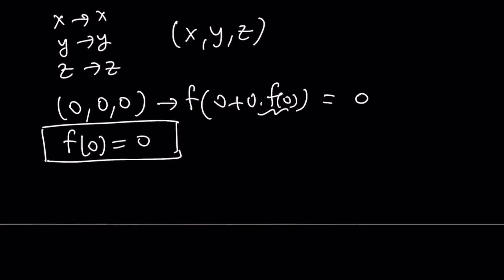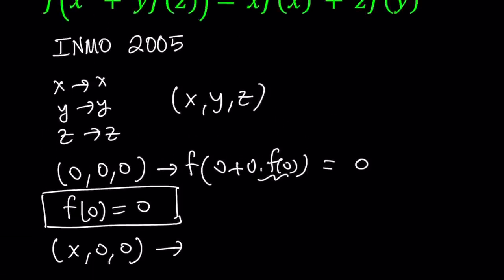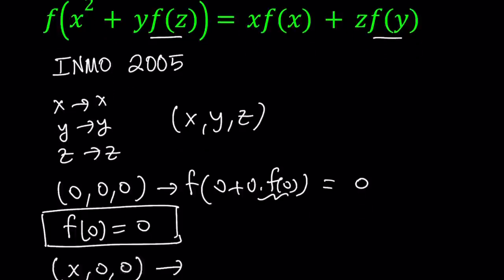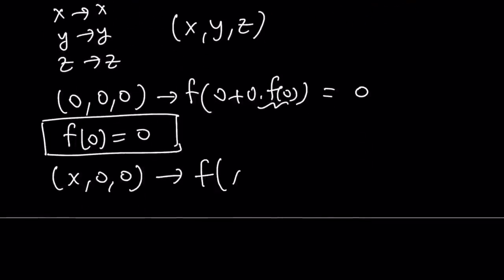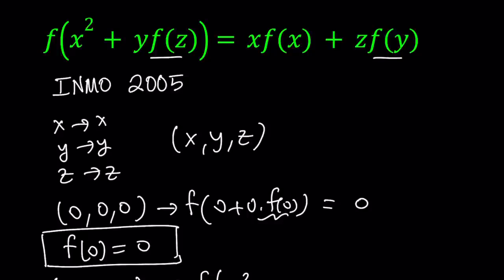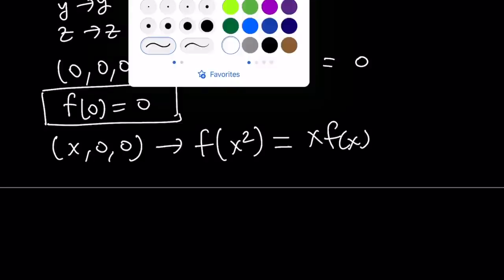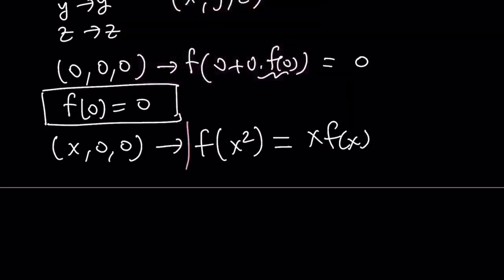Now I still want to replace some variables with 0. How about we use x as x but the others as 0 — so (x, 0, 0). If I replace x with x, y and z will make some things disappear. We're going to end up with f of x squared equals x times f of x. This is important because it gives us something in terms of a single variable, which can be used later.